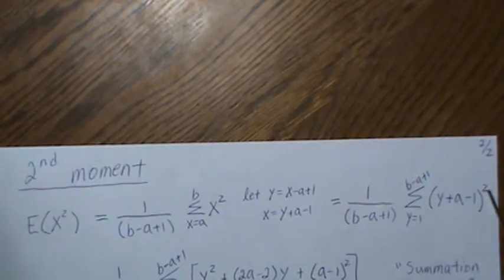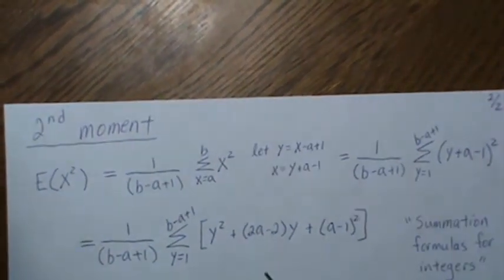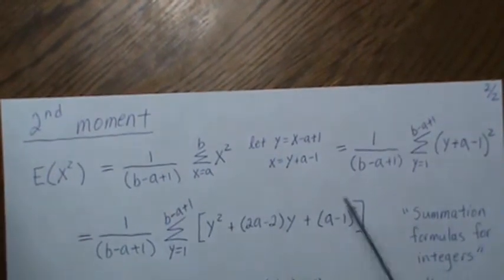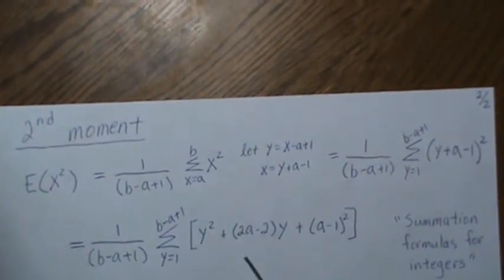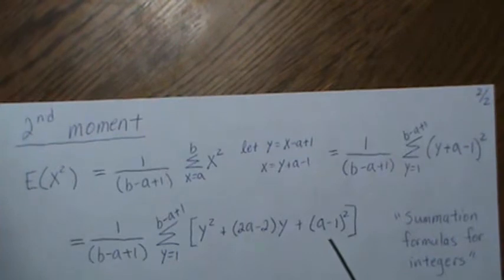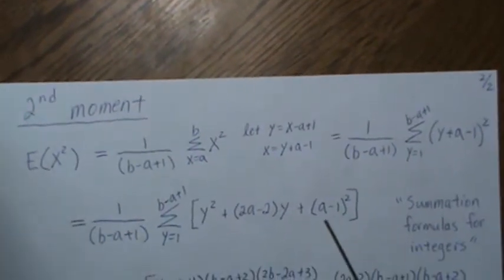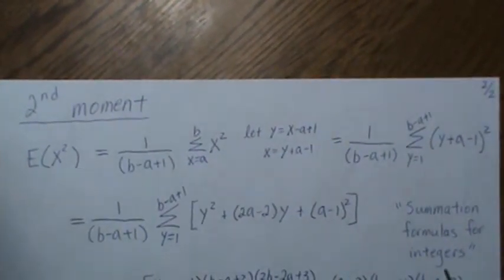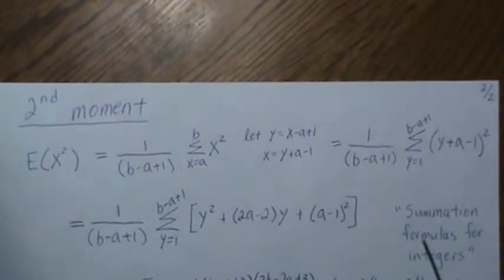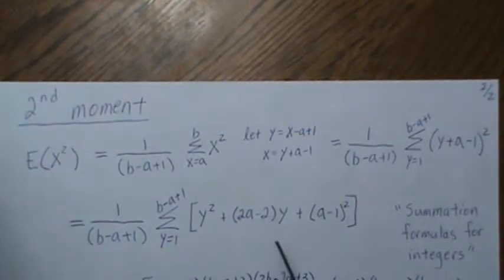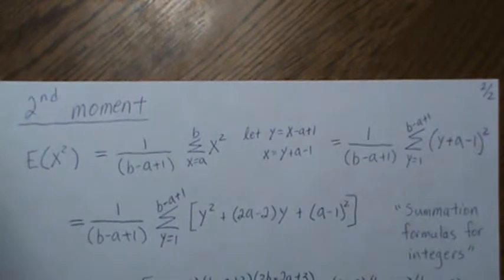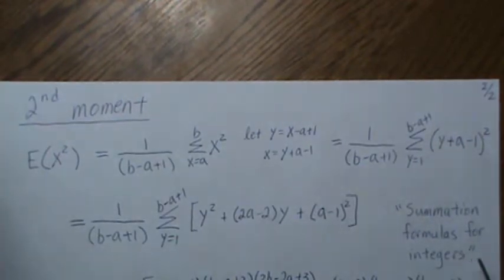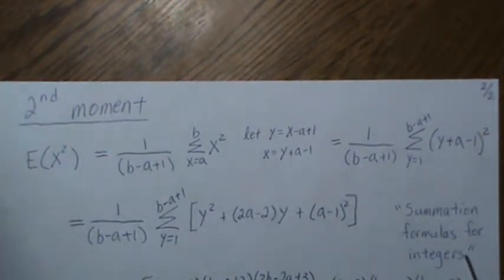Well, we're going to expand this and that's what we do here. So inside we get Y squared plus 2A minus 2Y plus A minus 1 squared. Now I have a video on summation formulas for integers if you want to review how to derive or calculate these sums. It's kind of a fun neat little video and I'd recommend it.